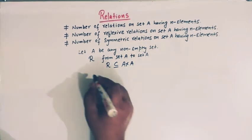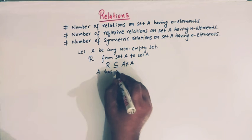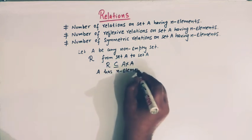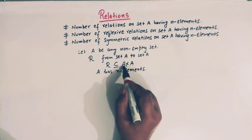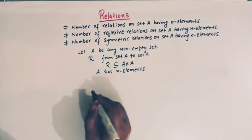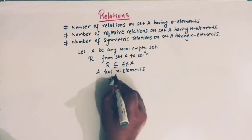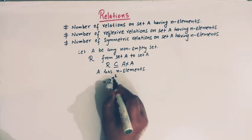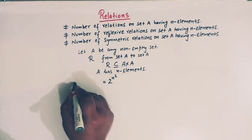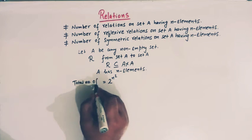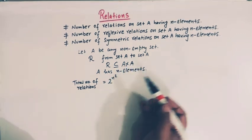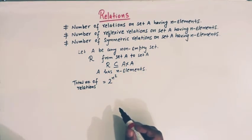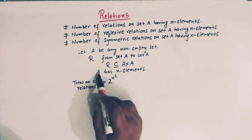Suppose A has n elements. The number of relations from set A to set A having n elements is given by 2 raised to n square. So 2^n² is the total number of relations on set A, where n is the total number of elements contained in set A.